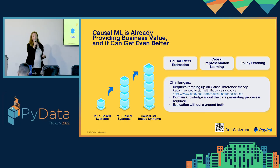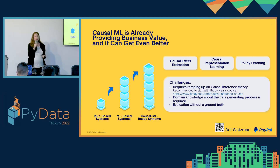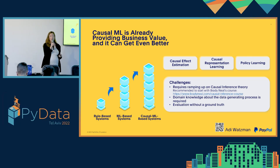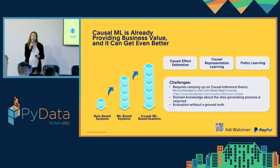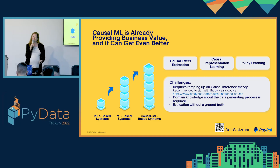In conclusion, causal machine learning is already providing us business value. We talked about causal effect estimation, the potential of causal representation learning, and policy learning. Obviously there is no magic — it takes hard work to learn the theory, to get to know your data generating process, and to evaluate these methods without a ground truth. Being invested in this field for the past year and a half, I really encourage you to experiment and learn about causal machine learning. I believe this way we can leverage its potential and bring the business value lift we are always looking for. Thank you so much for listening — I would be happy to continue this discussion later.